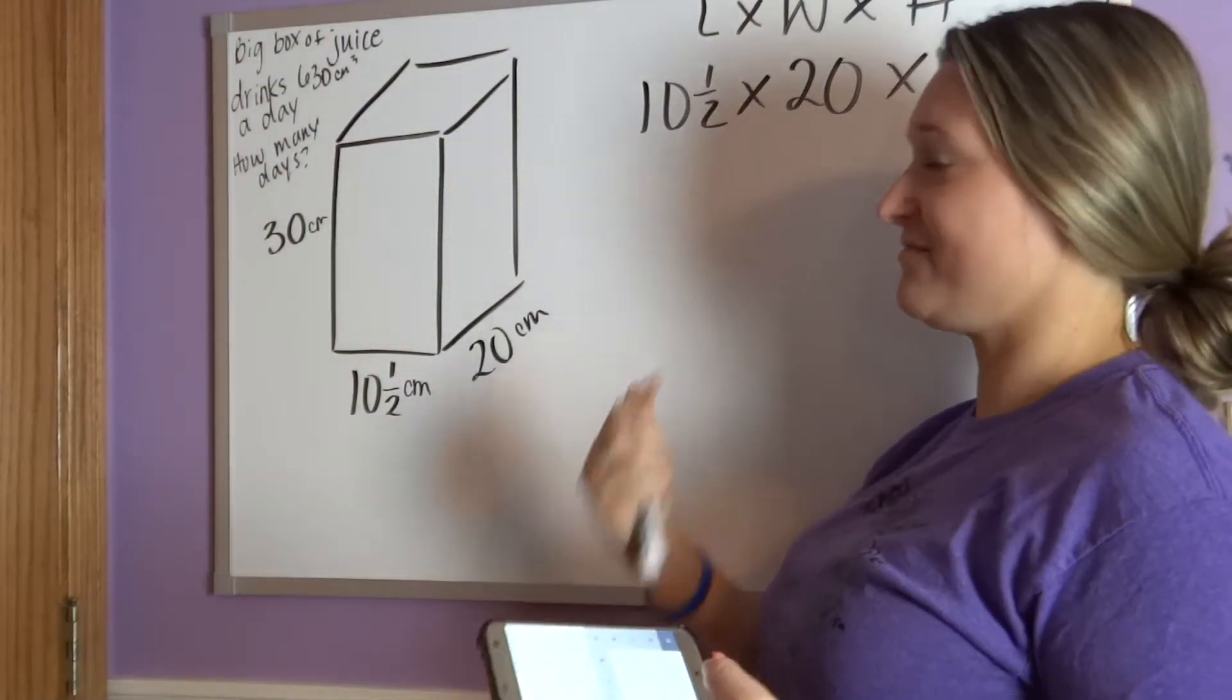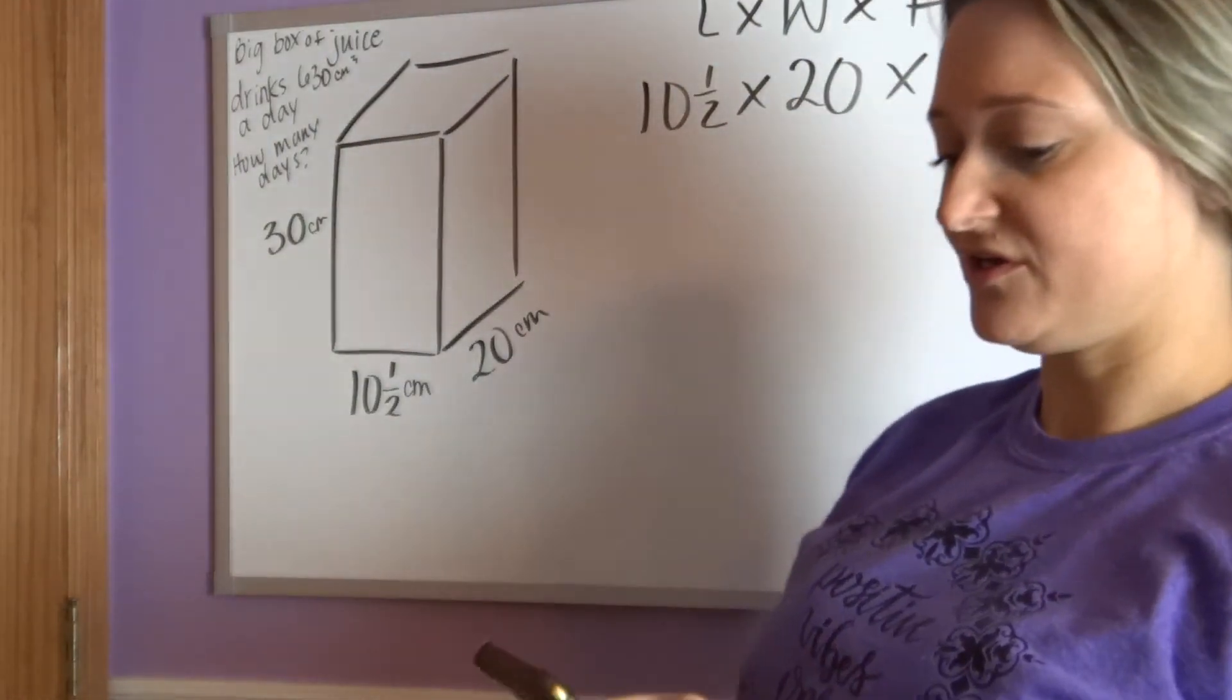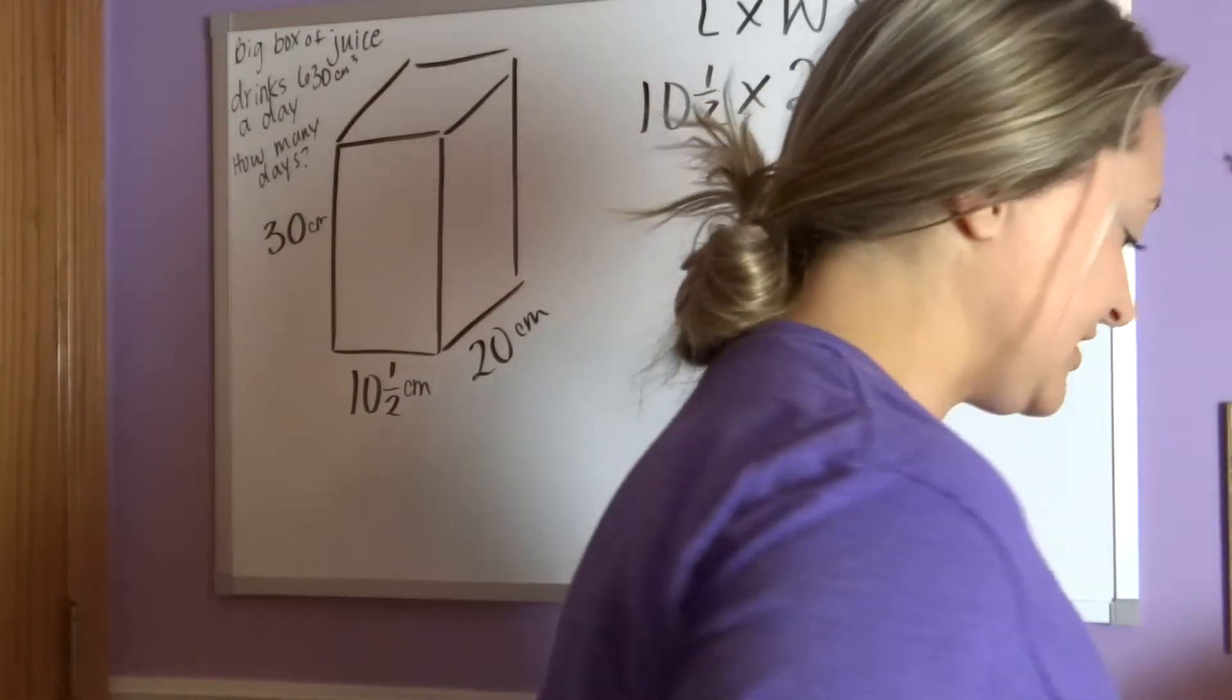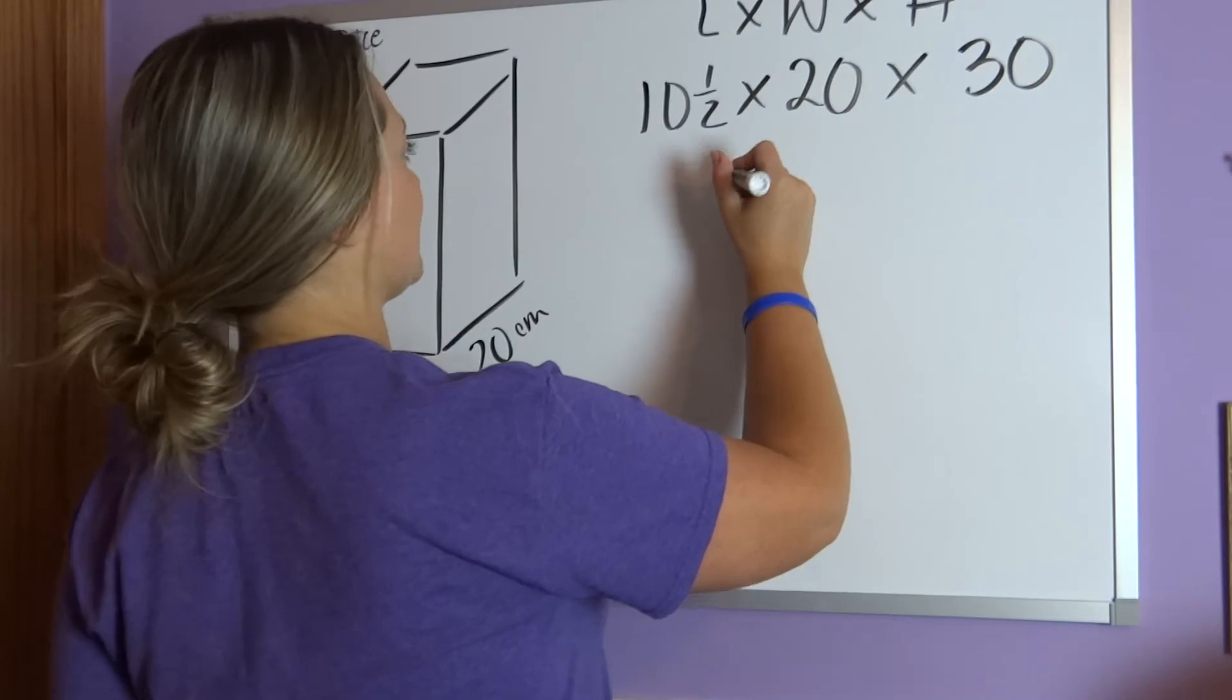How could I write that as a decimal? Well, you could do 10.5 times 20 times 30, and you would get 6,300.